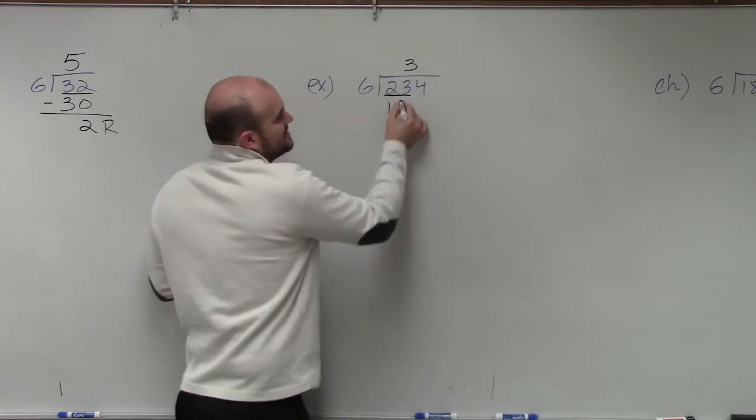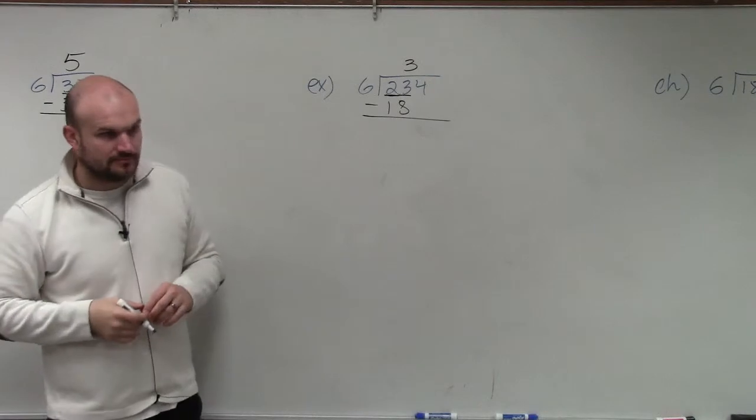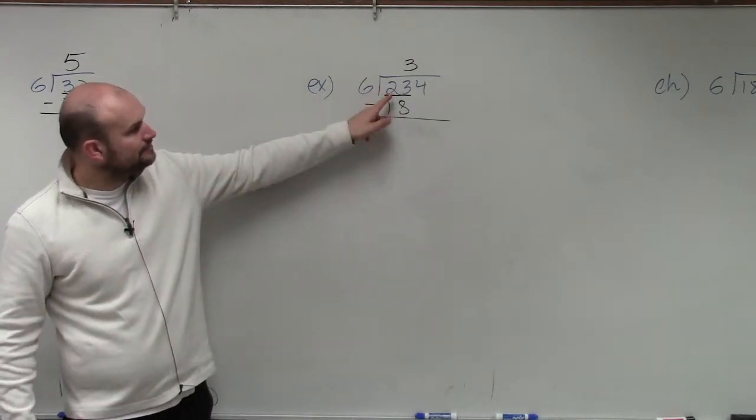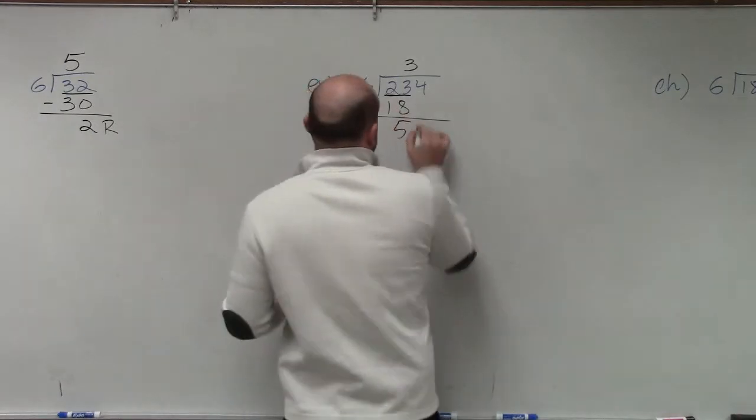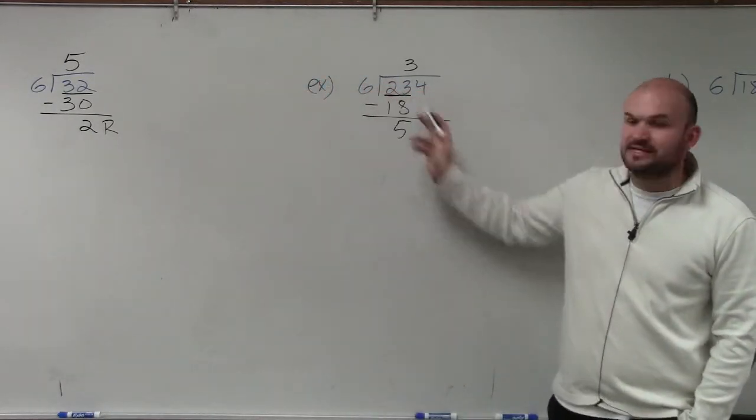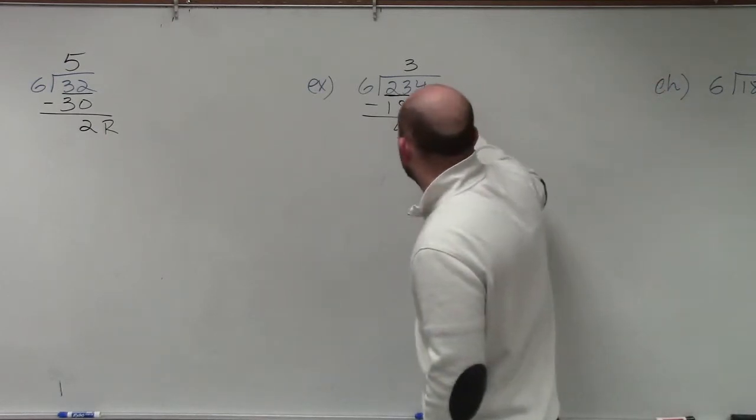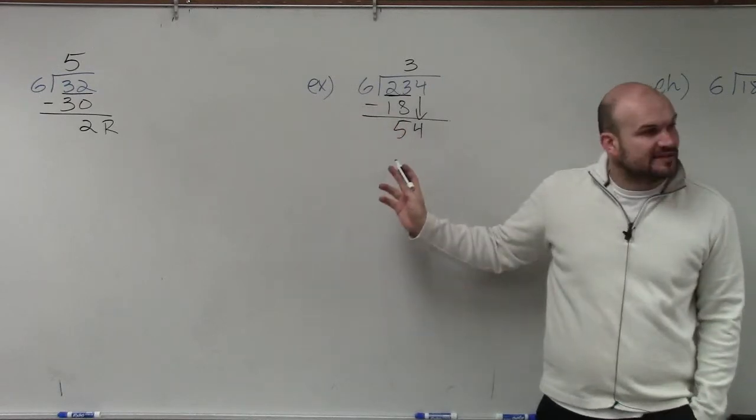3 times 6 is 18. Then we subtract. So 23 minus 18 is 5. So now, does 6 divide into 5? No. So we bring down the next number, and does 6 divide into 54?